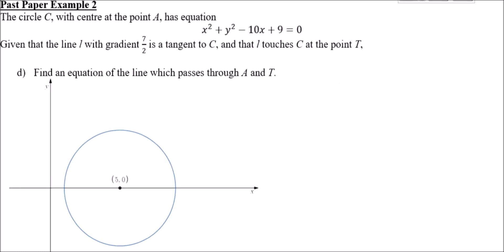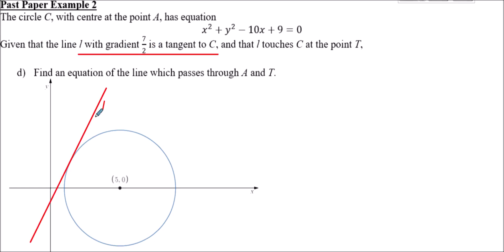For part d, we need to find the equation of the line through A and T. We're told there's a line L with gradient 7/2 that is a tangent to C, touching the circle at point T. Picturing what L looks like: it has a positive, fairly steep gradient and is tangent to the circle — it could be on either side of the circle, but it doesn't matter which sketch you use.